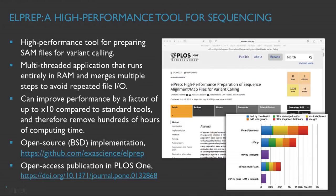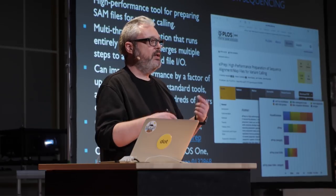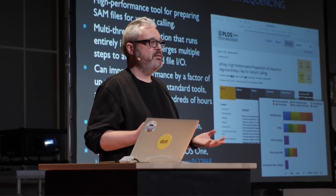What we developed a couple of years ago is a tool called L-Prep, together with Janssen Pharmaceuticals and Intel Corporation, which is a high-performance tool for preparing such files for variant calling. It's a multi-threaded application where we reorganized the software architecture so it can completely run in DRAM and take advantage of parallelism, and this allows us to run certain parts of the pipeline up to ten times faster than standard tools.